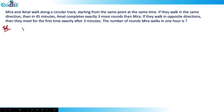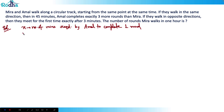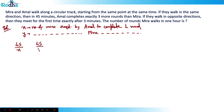Let's say x is the time required by Amal to complete one round, and y is the number of minutes required by Mira to complete one round. If they walk in the same direction, in 45 minutes the number of rounds completed by Amal is 45/x, and the number of rounds completed by Mira is 45/y. The difference of rounds is equal to three, so: 45/x − 45/y = 3. This is Equation 1.